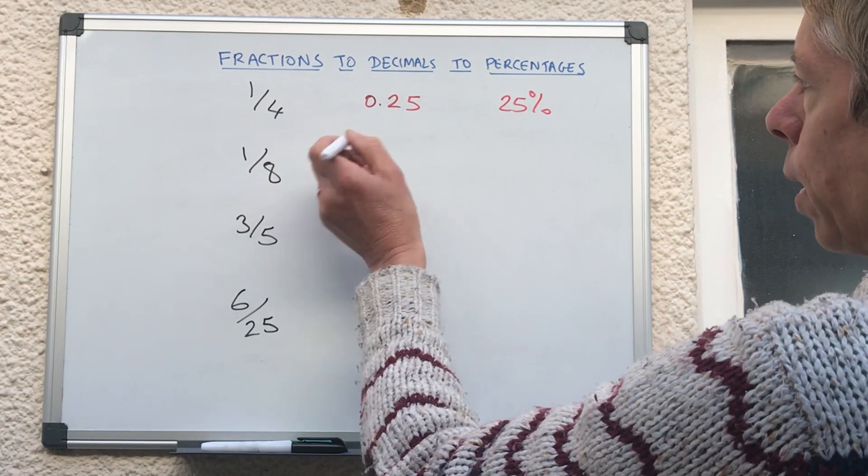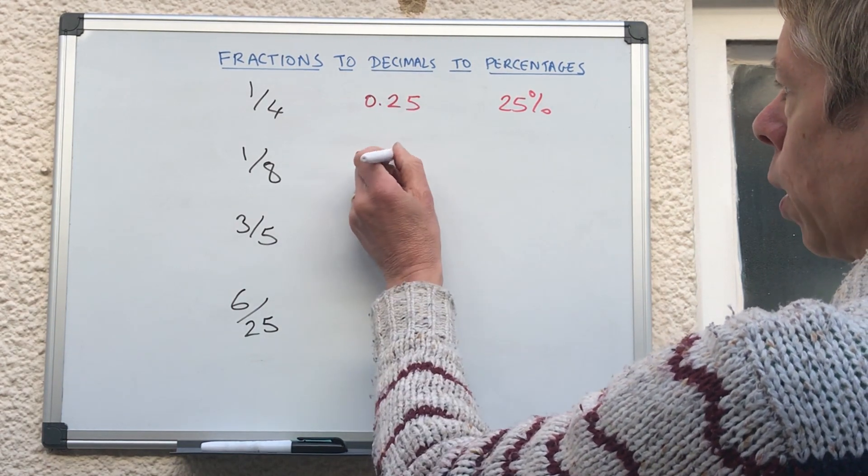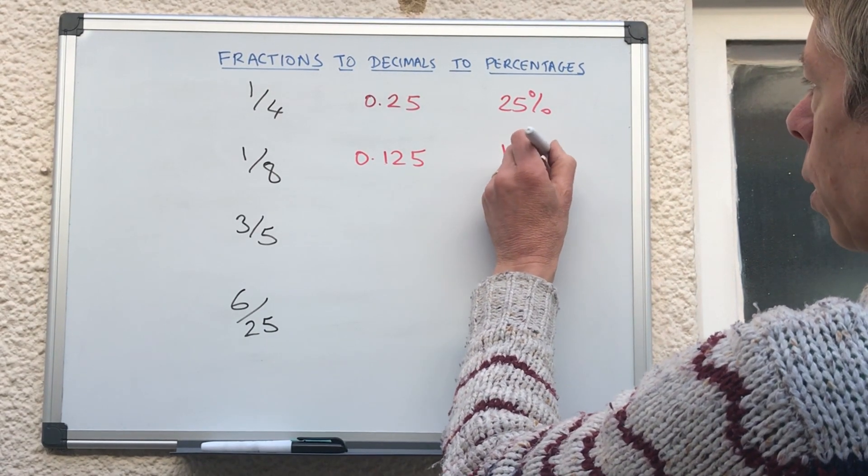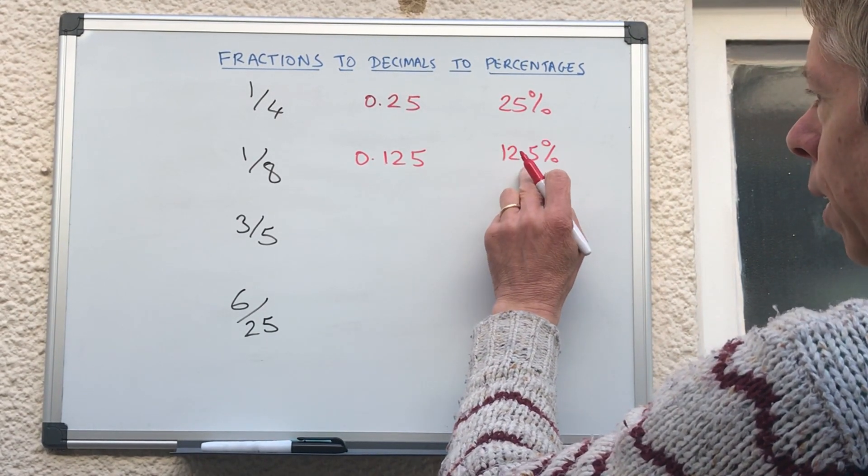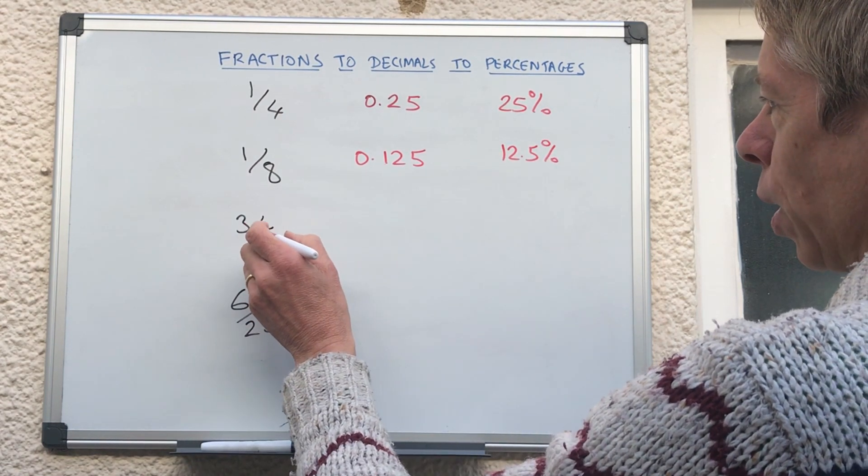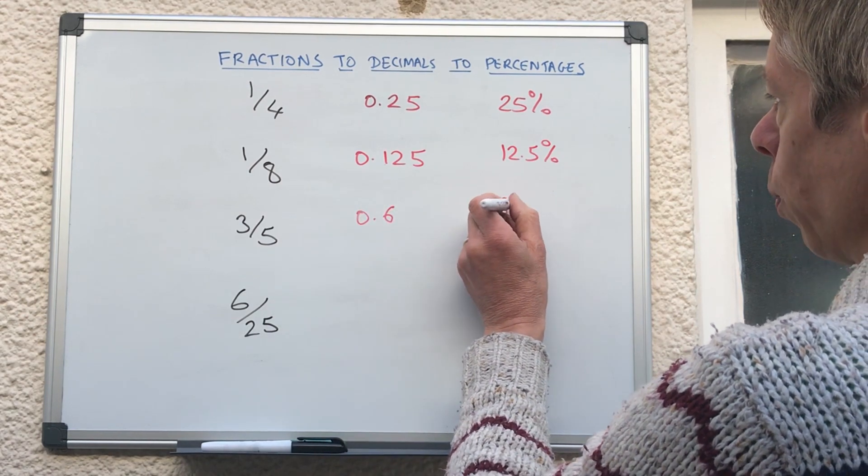Half of a quarter is an eighth, so half of that is, half of 250 is 125, so 0.125, which is 12.5%, not 125%, because that would be more than we started off with. Three fifths, change it into six tenths, so that will be 0.6, which is 60%.